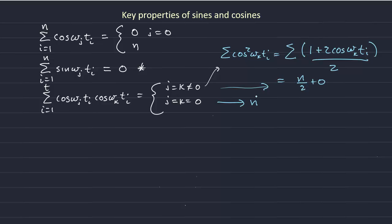And then finally, when j is not equal to k, then we can use another trig identity and show that that's equal to 1 half times the sum of cosine omega j plus omega k t i.